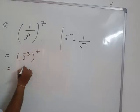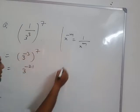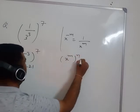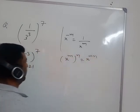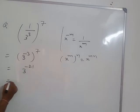So this will give you 3 power minus 21. You know this rule x power m raise to power n equals x power mn. So you write this question like this way.